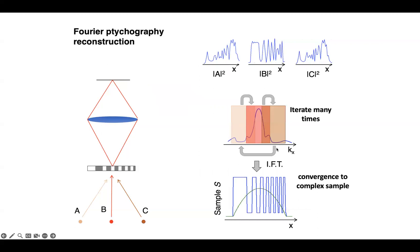We'll then go back to LED-A, iterate to B, C, etc., and many times through iterating will yield, more often than not, a complex spectrum with the correct amplitudes and phases, such that when we inverse Fourier transform that final complex spectrum, we get the correct high resolution sample, both its amplitude and its phase.